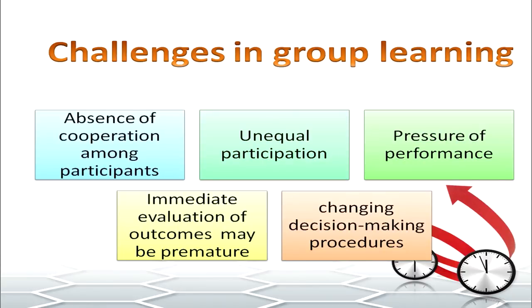Group learning has a number of challenges. There can be absence of cooperation among participants, unequal participation where the brighter child does more of the work while another shirks, and pressure of performance where low achievers are under tremendous pressure to match the level of other group members. Immediate evaluation of outcomes may also be premature, and there is changing decision-making at every step.